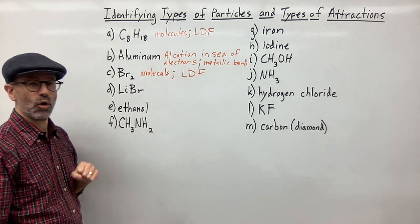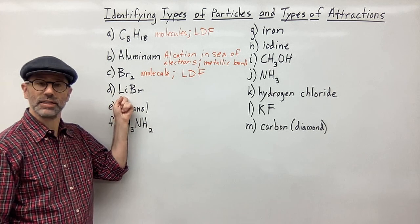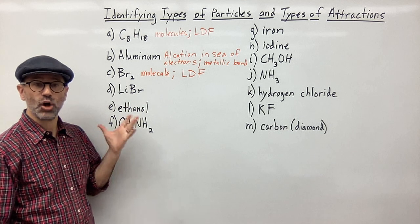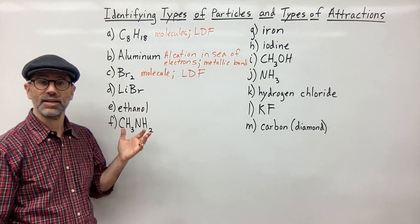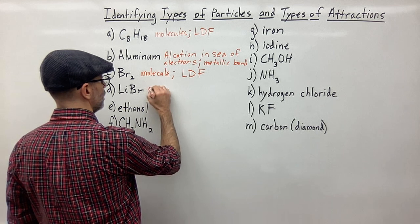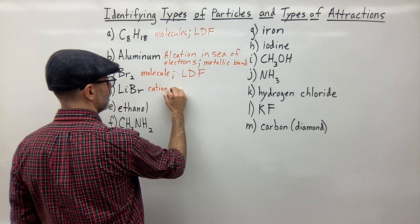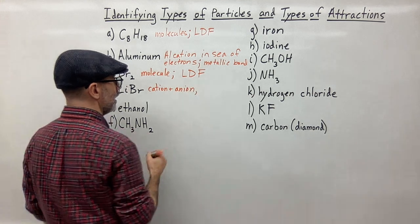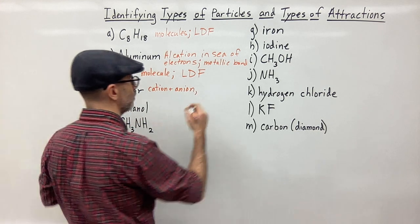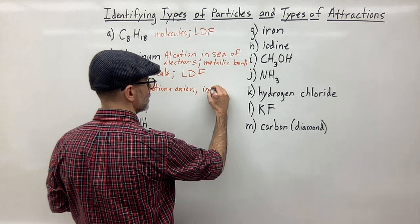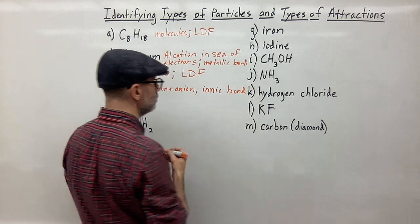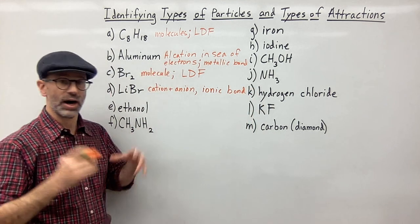For D, we have lithium bromide. Lithium is a metal and bromine is a non-metal, so we have a metal and a non-metal together — this is going to be an ionic substance. The particles are the positive ion and the negative ion, the cation and anion. The attractive force holding them together is the ionic bond — the electrostatic force between the ions, or ion-ion interaction.